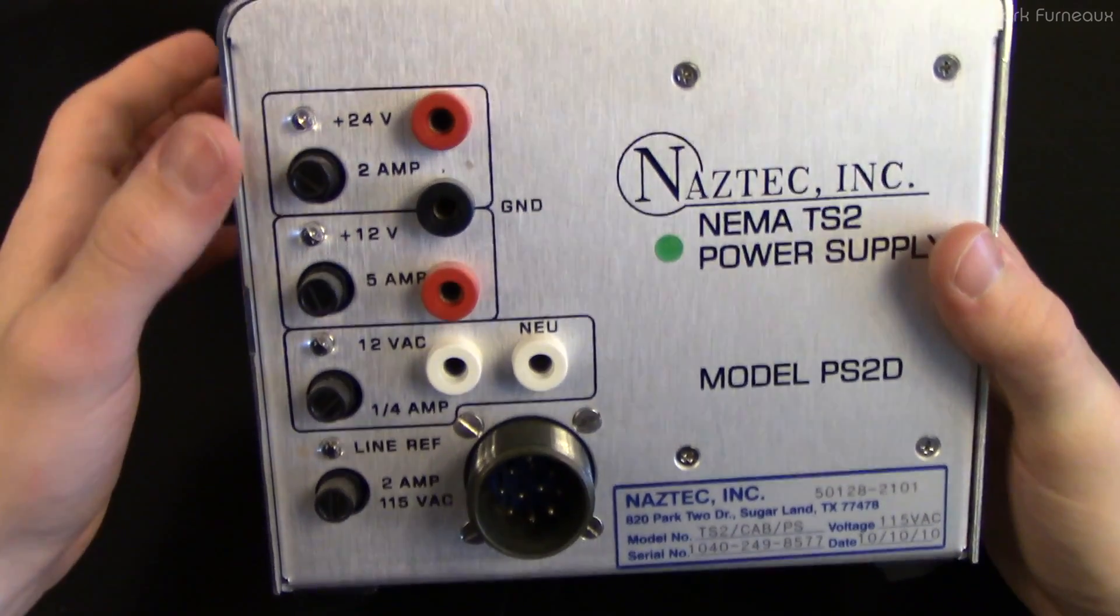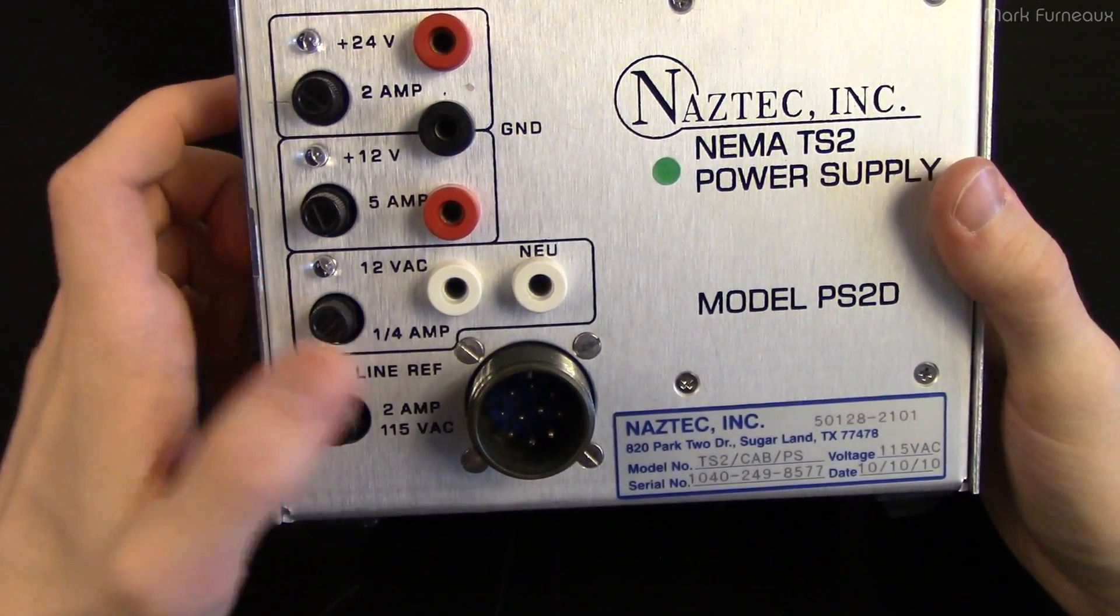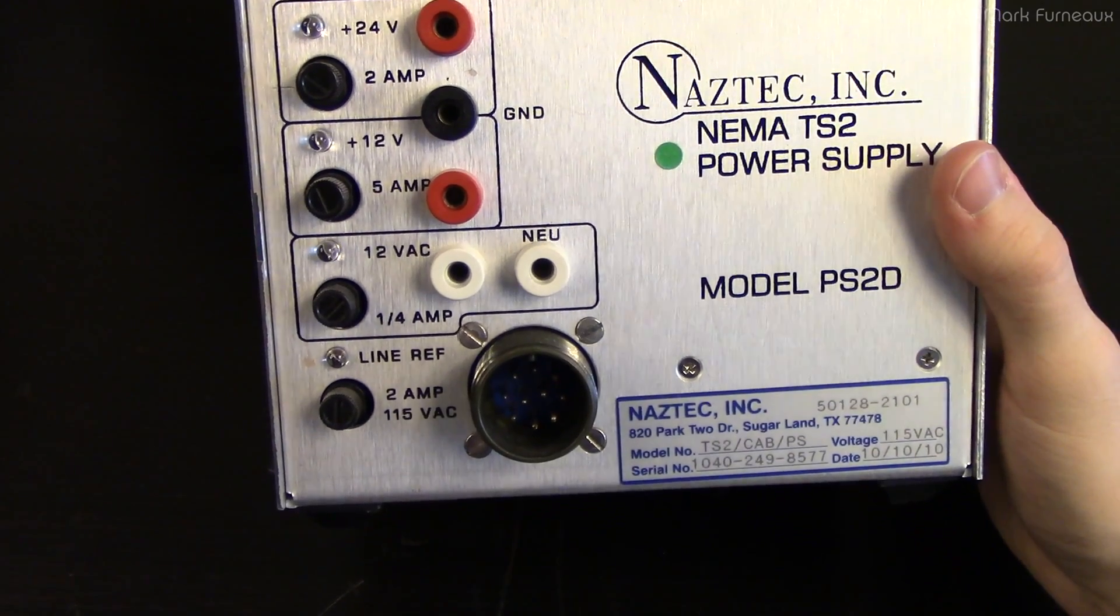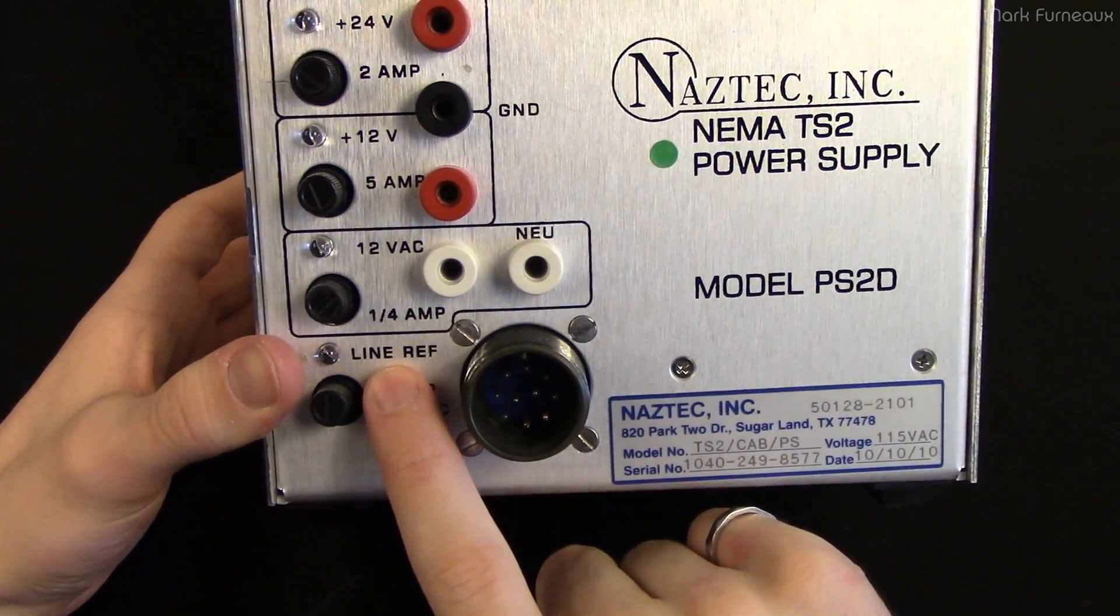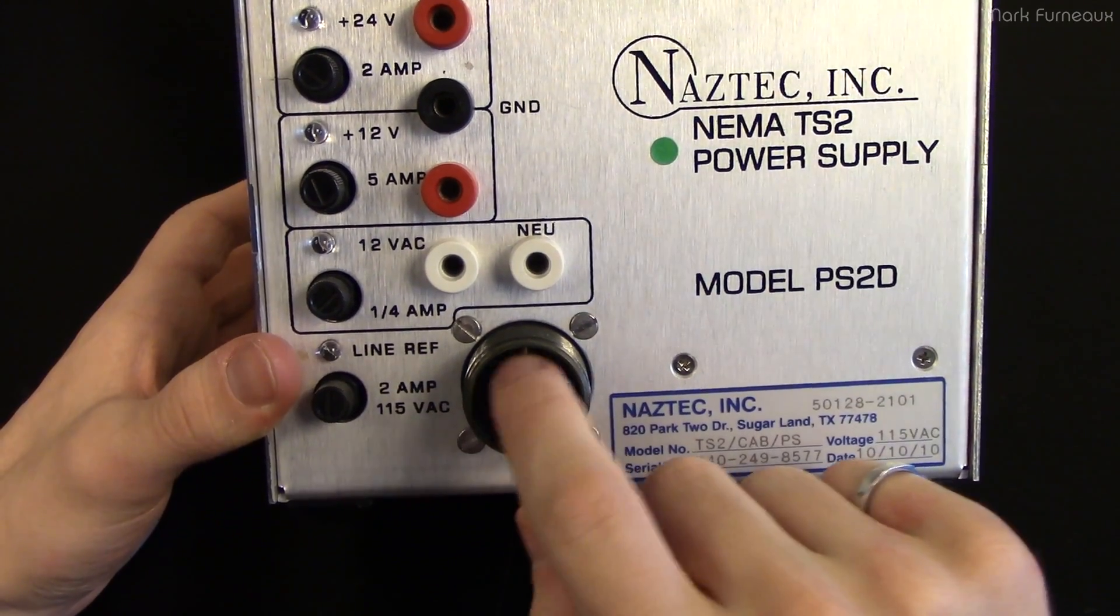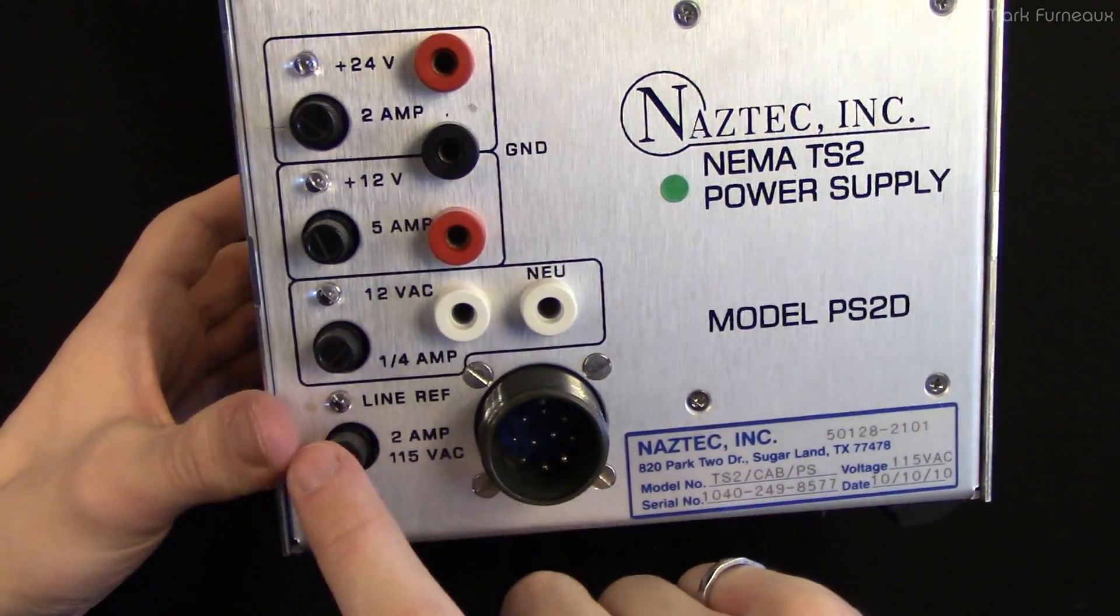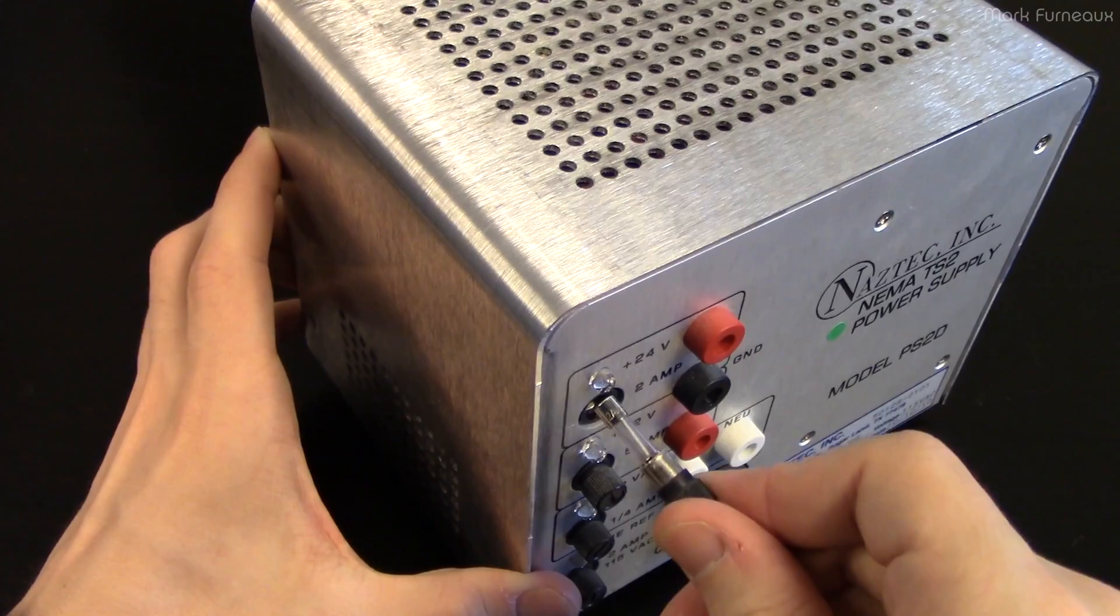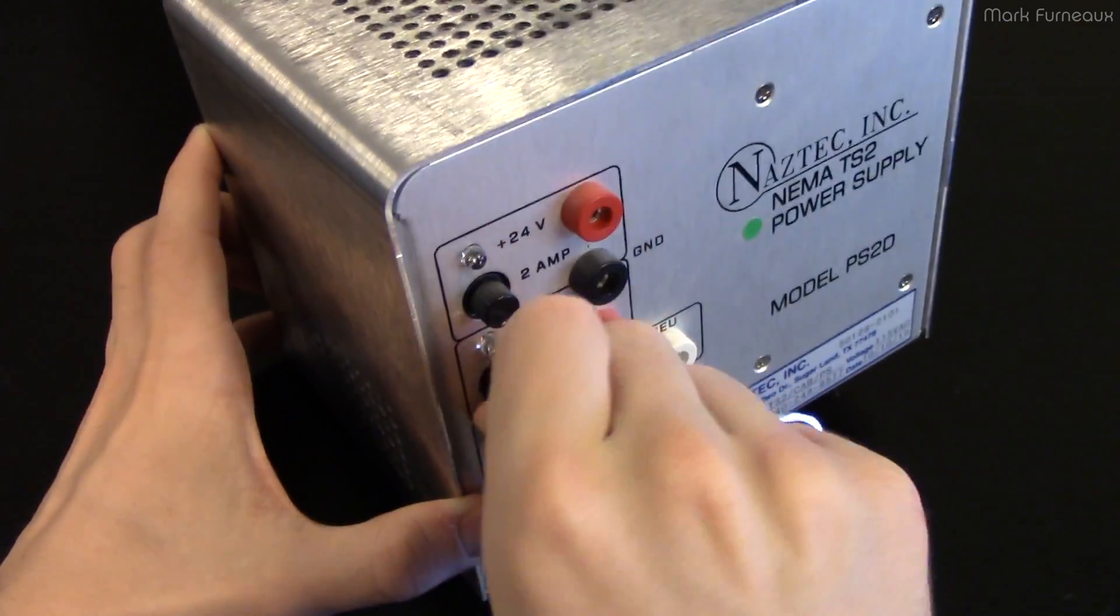So it's actually a relatively beefy unit. We've got 24 volts at 2 amps, 12 volts at 5 amps, of course, both DC. And we have a little quarter amp, 12 volt AC output. And we have this line ref light. And basically, what I believe this is, is it's probably a pulse that comes out of this big military style circular connector with the line. So with the 60 hertz line, you get like a pulse out. And so maybe you could use that for clocking something or for timing something. That would be my guess. These things look like adjustments, but they're actually not. These are actually just fuses. So there's an individual fuse for each of the outputs.